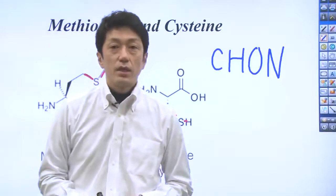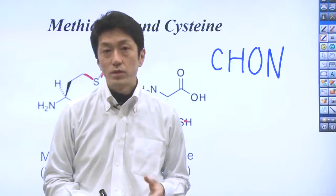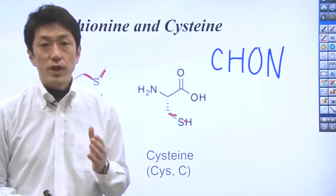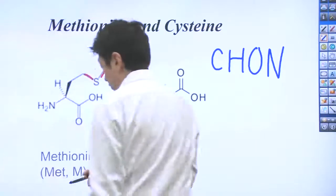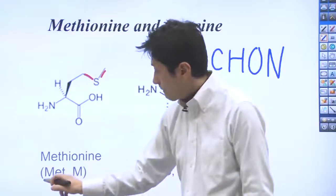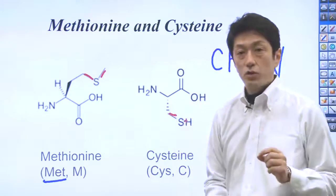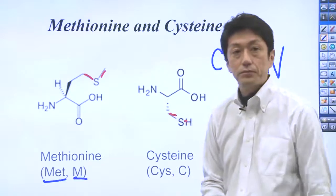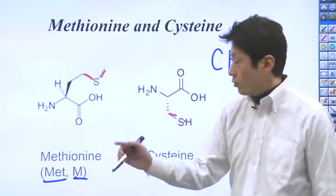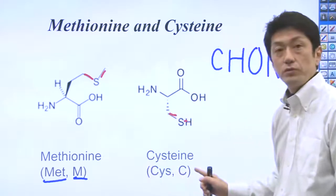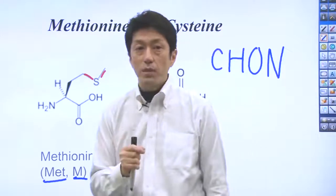In research, the names of amino acids are abbreviated with both three-letter and one-letter codes. For example, the three-letter code for methionine is MET, and the one-letter code is M. In this lecture, we extensively use the one-letter code. In the next video clip, I'll tell you how to remember them all.